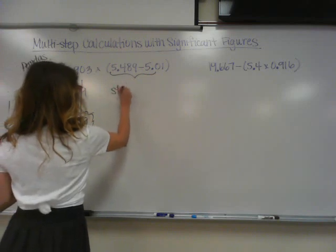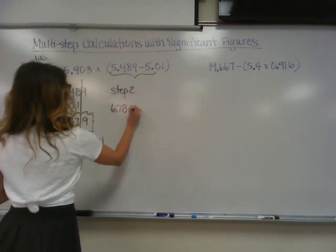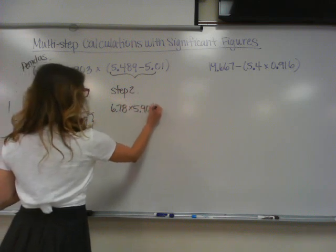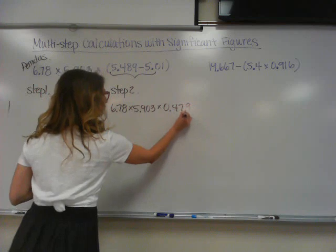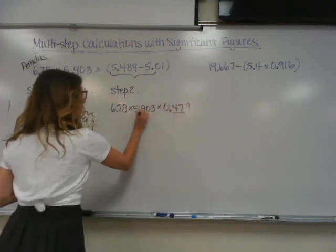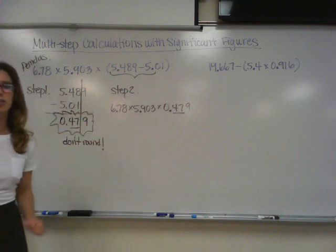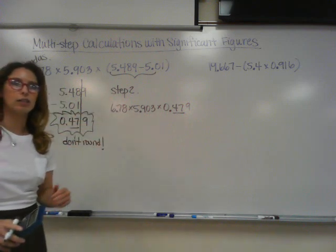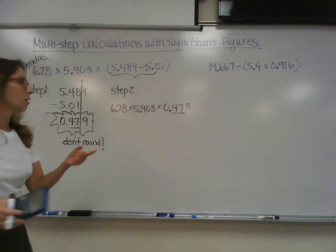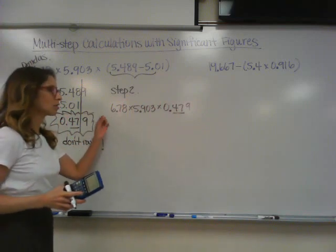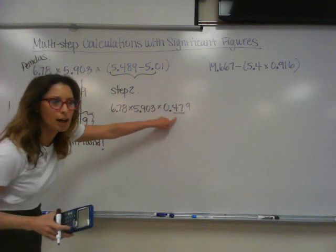Let's do step number two. Now I'm going to multiply everything together: 6.78 times 5.903 times 0.479, with the 47 still underlined. I'm leaving my subtraction step and going to multiplication. Multiplication and division involve a different rule — for this one, we have to count sig figs.